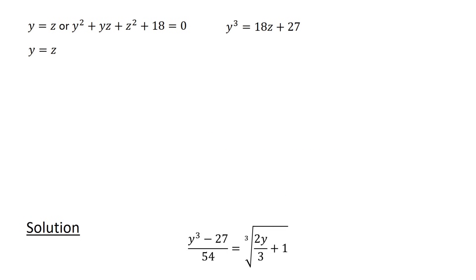When y equals z, the equation y cubed equals 18z plus 27 becomes y cubed equals 18y plus 27, or y cubed minus 18y minus 27 equals 0.